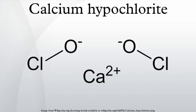Calcium hypochlorite, also known as chlorine powder or bleach powder, is a chemical compound with formula Ca(ClO)2. It is widely used for water treatment and as a bleaching agent. This chemical is considered to be relatively stable and has greater available chlorine than sodium hypochlorite.